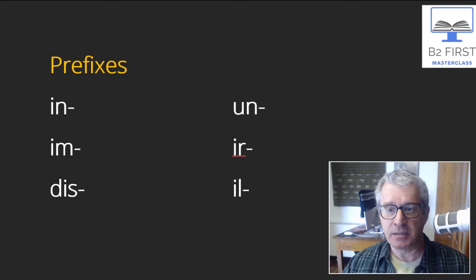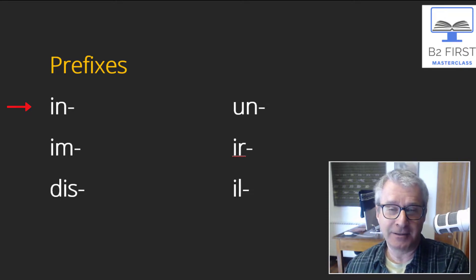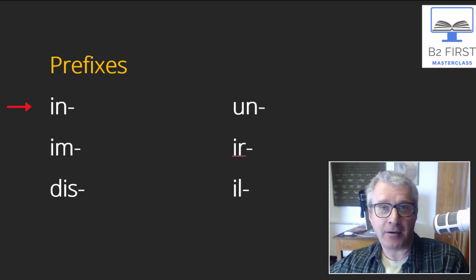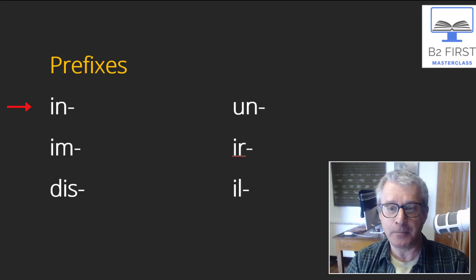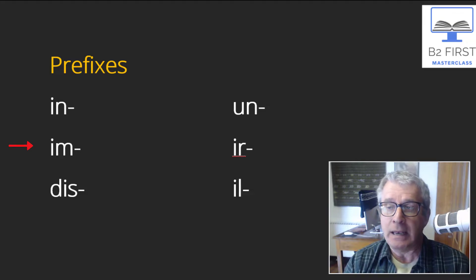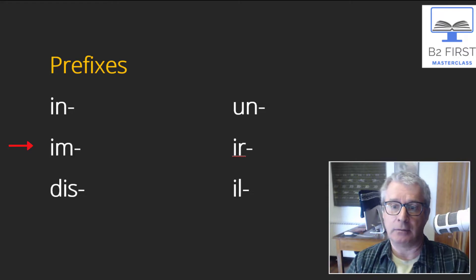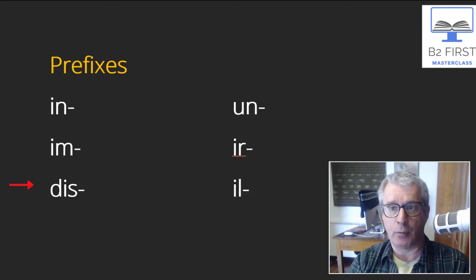So here are some examples of prefixes. 'In-' for example in the word 'input,' the opposite of 'output'—so output goes out and input comes in. You have inputs in your TV, in your computer. Another example: within inequality. Equality and inequality is the opposite. 'Im-' mortal—we live, we die, we are mortal. What's the opposite? Immortal.